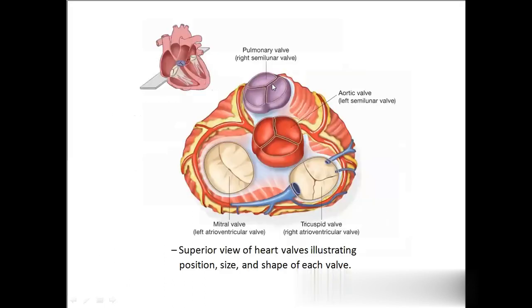This is the pulmonary valve, or the semilunar valve — you can see it looks like half-moon shapes. And this is the aortic valve, which also looks like a half-moon shape. This is the tricuspid valve and this is the bicuspid valve, which we also call the mitral valve.